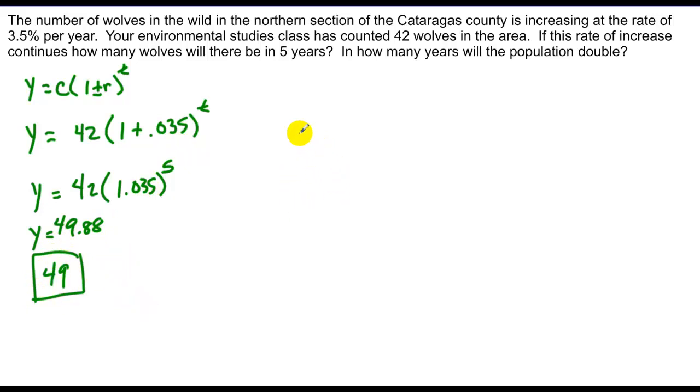Now, the second problem is more complex in that we want to know when the population doubles. So we want to know when we go from 42 to double that. So 84 is equal to 42 to the 1 plus .035 to the t power. We want to solve for an unknown variable. And at this point, we really don't know how to do that. The only thing we could do is isolate this exponential. So we have 2, I divide by 42 on both sides, is equal to 1.035 to the t power. Now, in order to solve for this, we're going to have to do some calculator work.